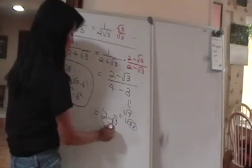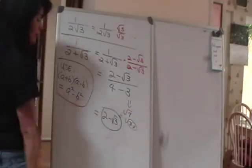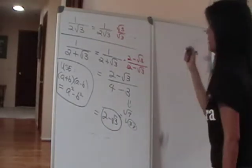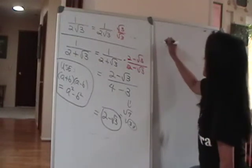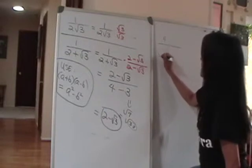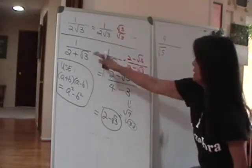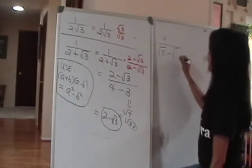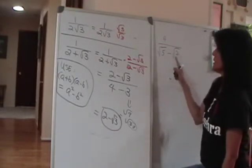So you have 2 minus square root of 3 over 4 minus 3, which is 1. The denominator is 1, so you're done. Now let's do another example. Let's say you have 4 over square root of 5 minus square root of 7.